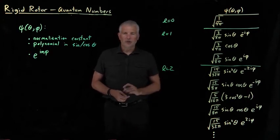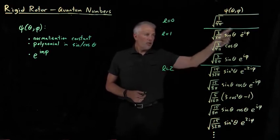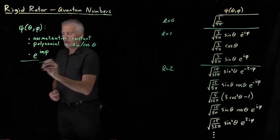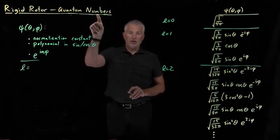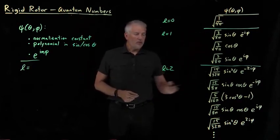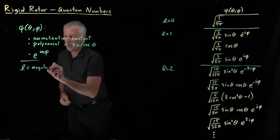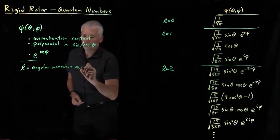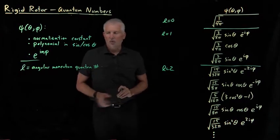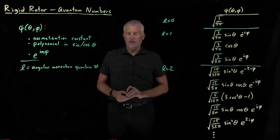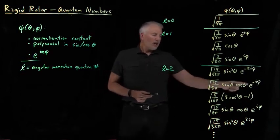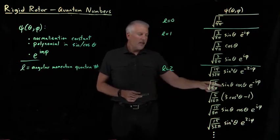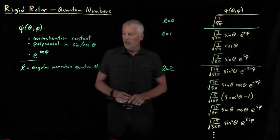I'm using the variable L to describe the degree of the polynomial that describes the theta dependence of the function. That number L is an integer — we call it a quantum number, a number that describes the quantum mechanical wave functions. Specifically, we call it the angular momentum quantum number. It's not obvious yet why we'd call it that, but the preview is: the larger the value of L, the more oscillation the function has, and the higher the angular momentum of its angular dependence.